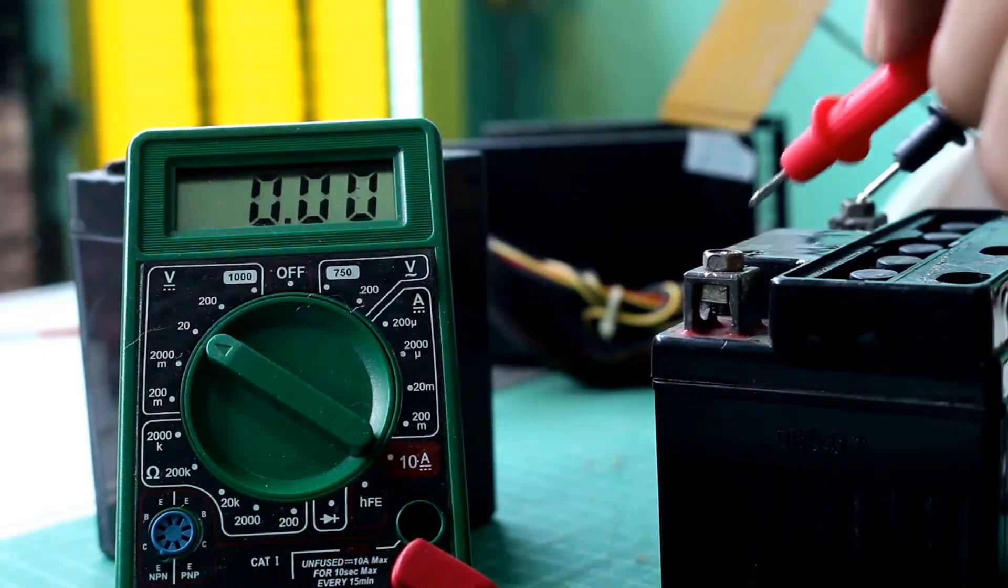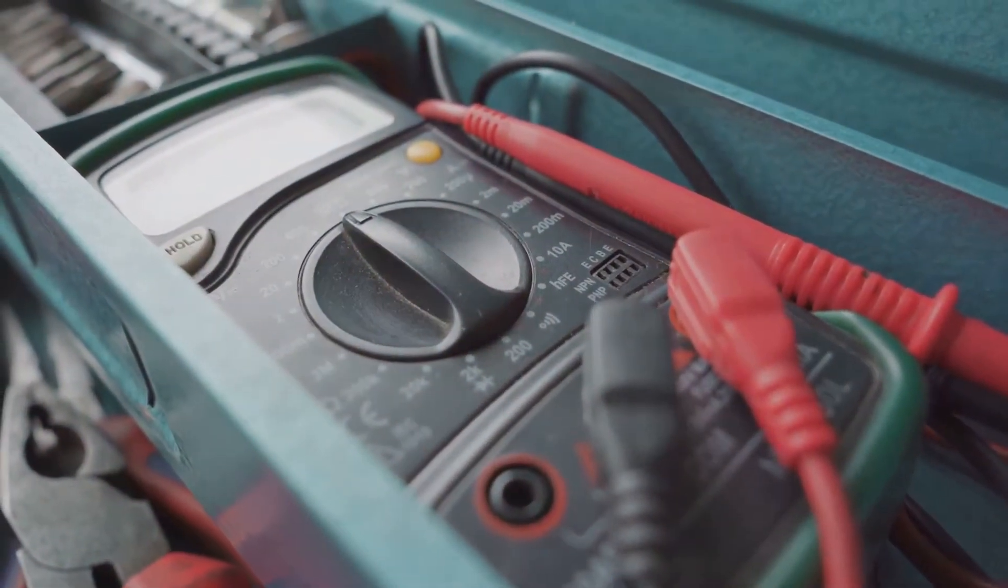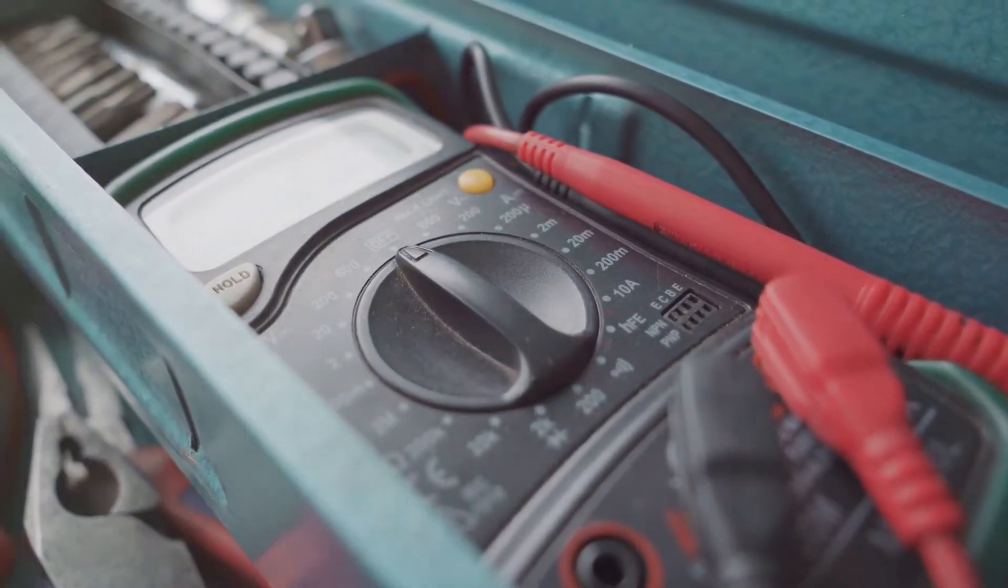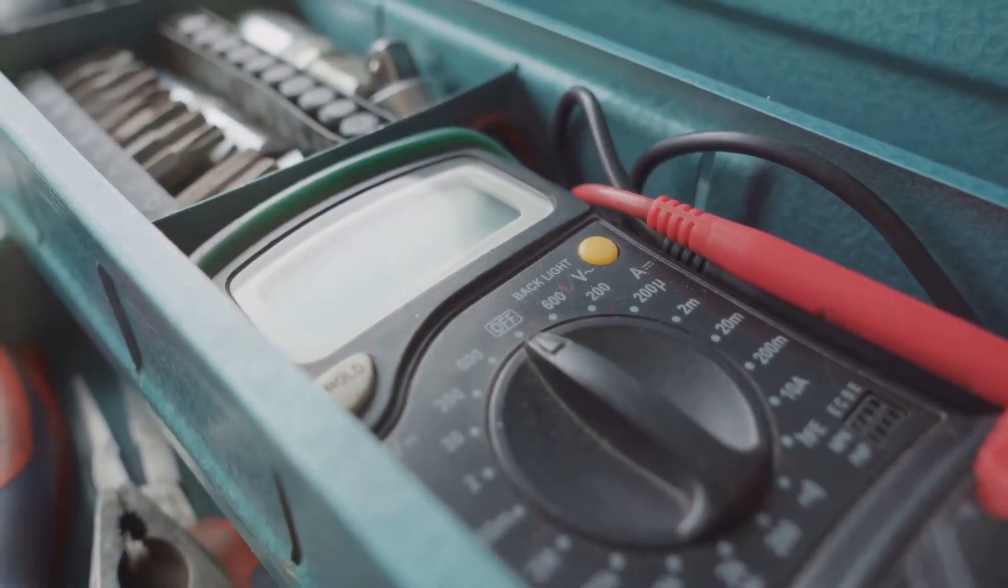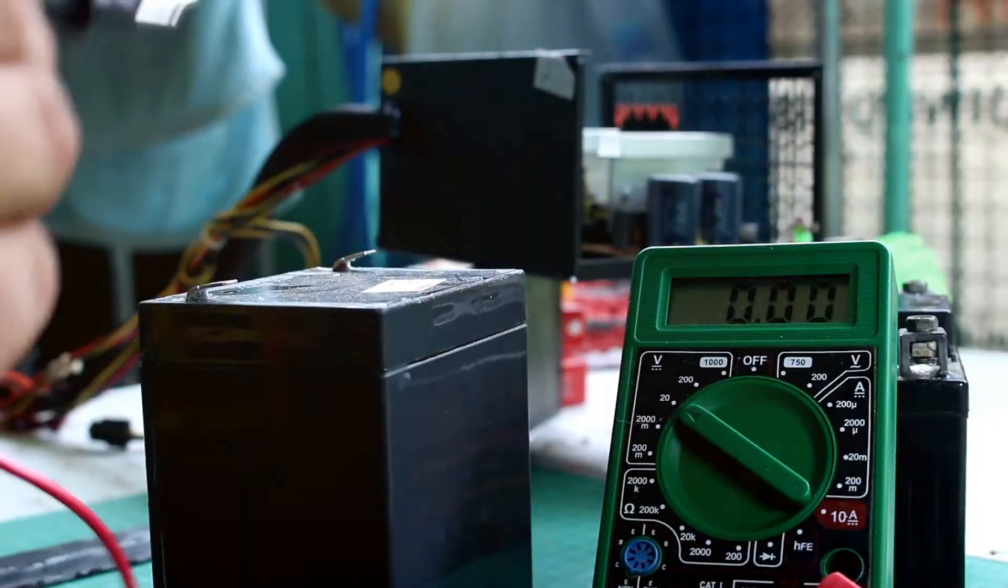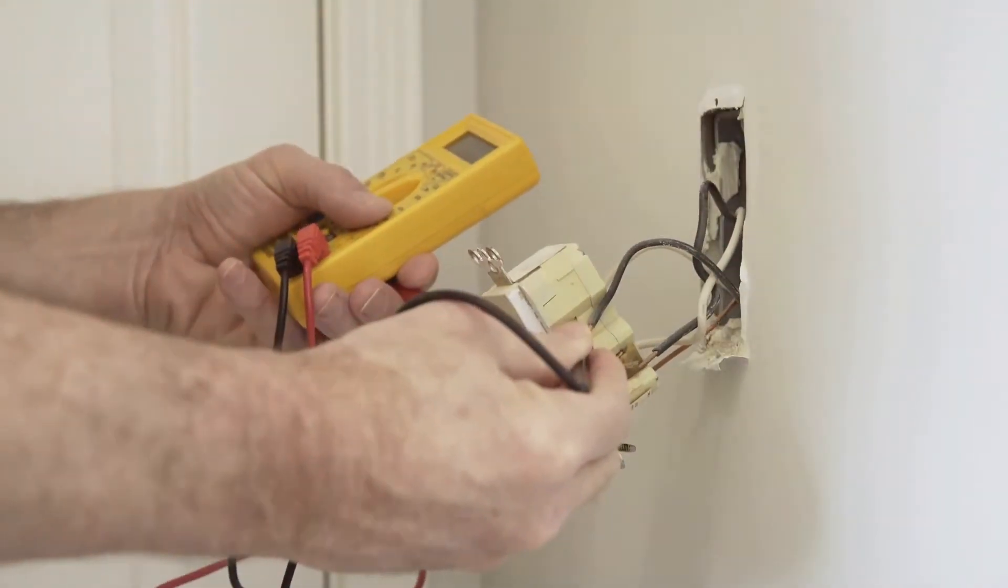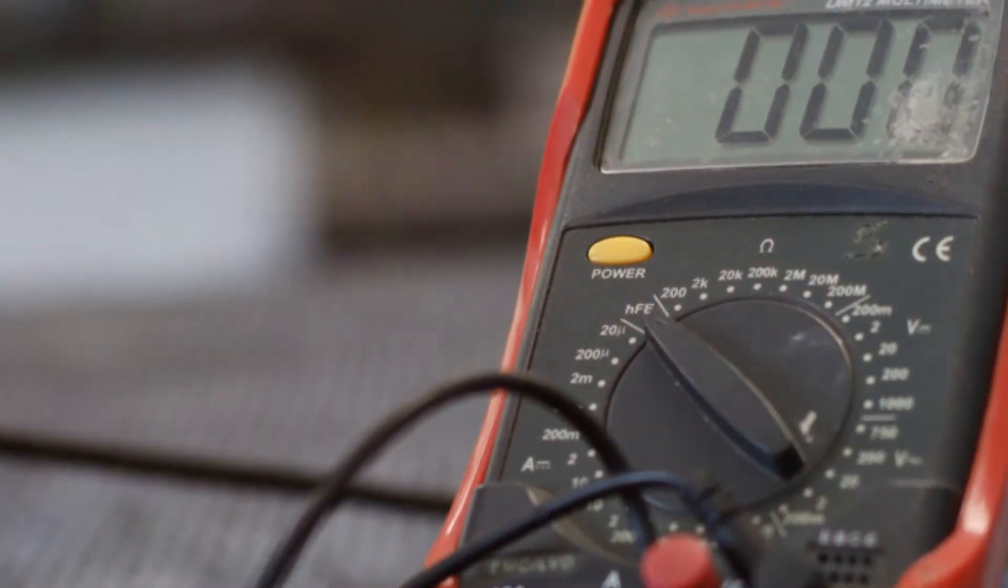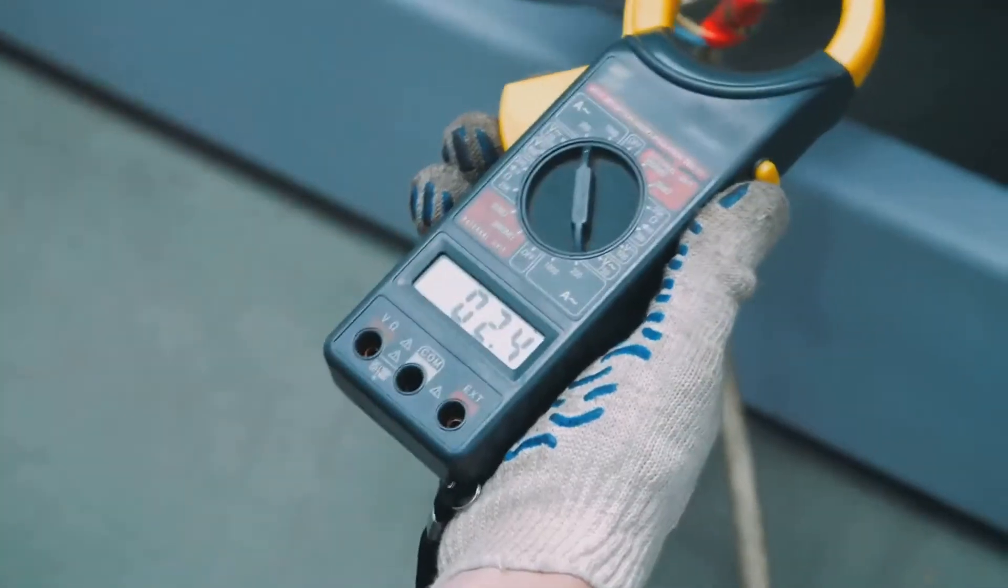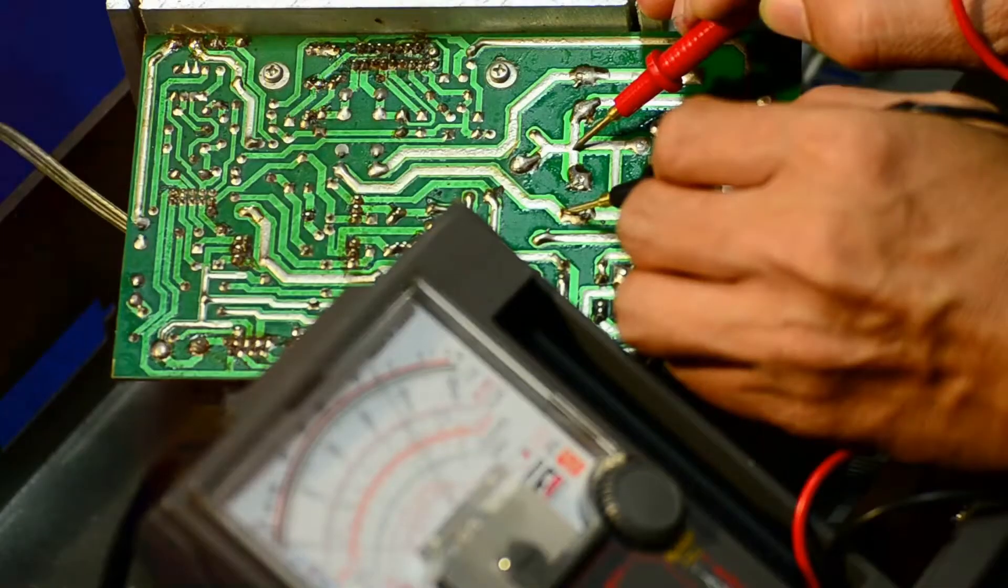Every good detective needs a trusty tool, and in the world of electronics that tool is the multimeter. This handy gadget is like a Swiss army knife for electronics, helping us measure important electrical properties. With a multimeter we can measure voltage (the push of electricity), current (the flow of electricity), and resistance (the opposition to the flow).